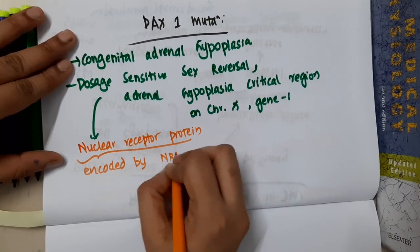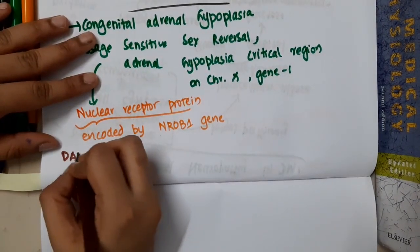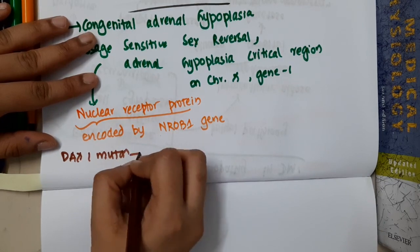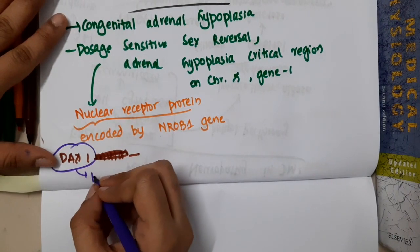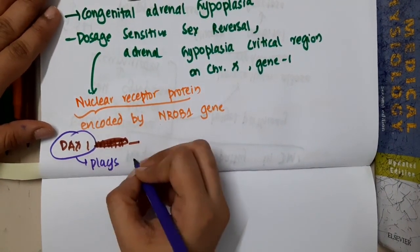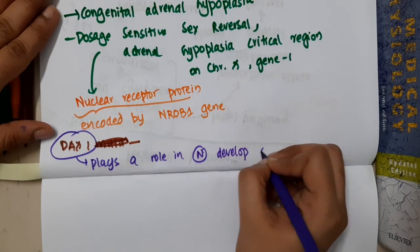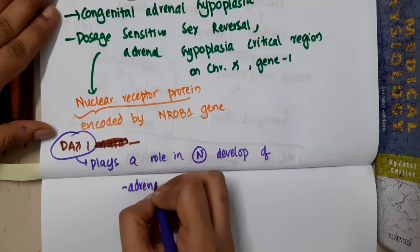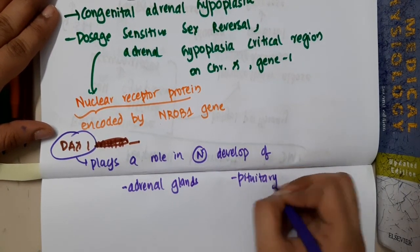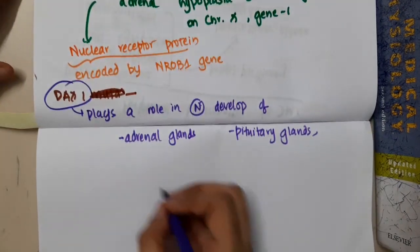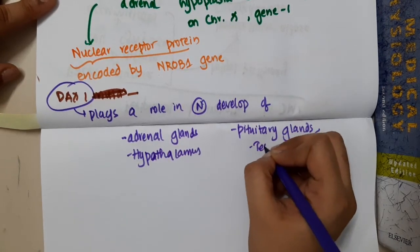DAX1 plays an important role in normal development. It is important for development of adrenal glands, pituitary glands, hypothalamus, testis, and ovary.